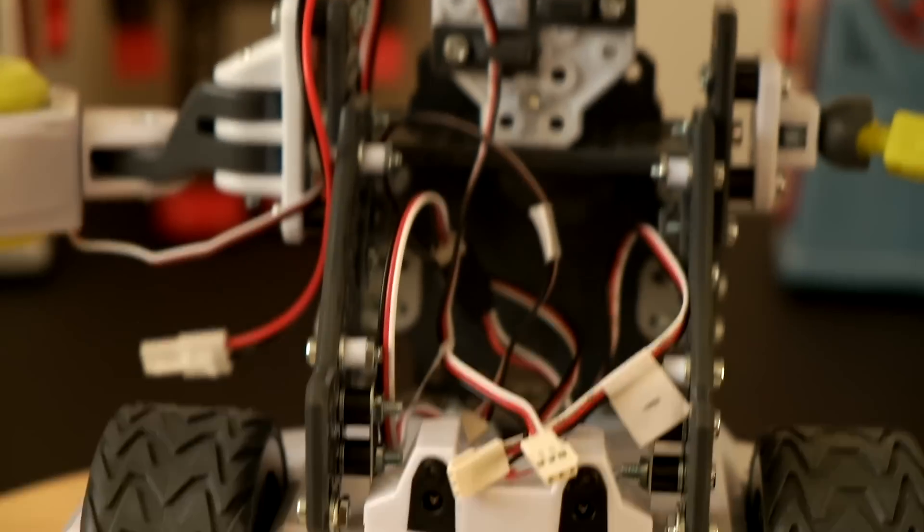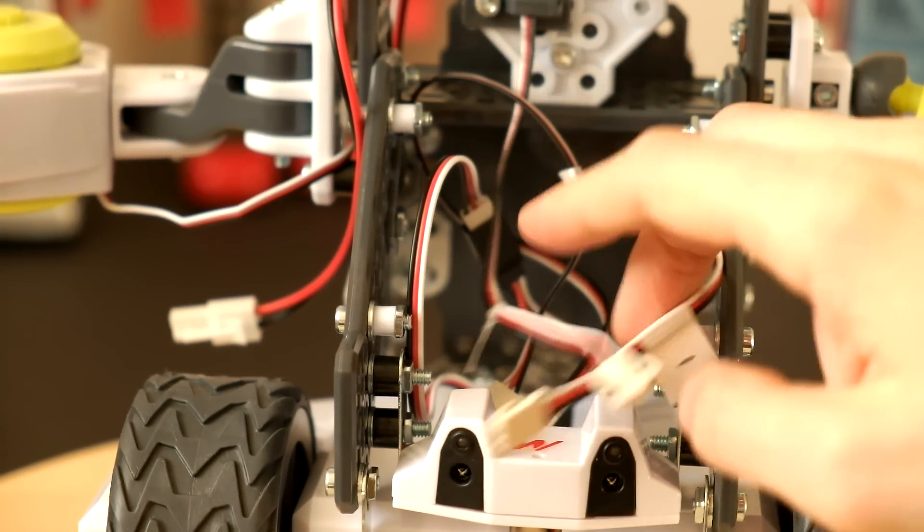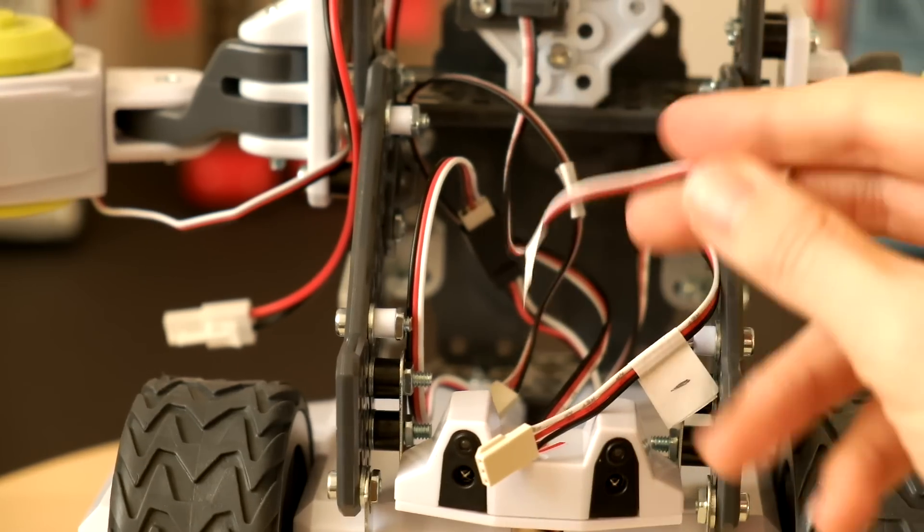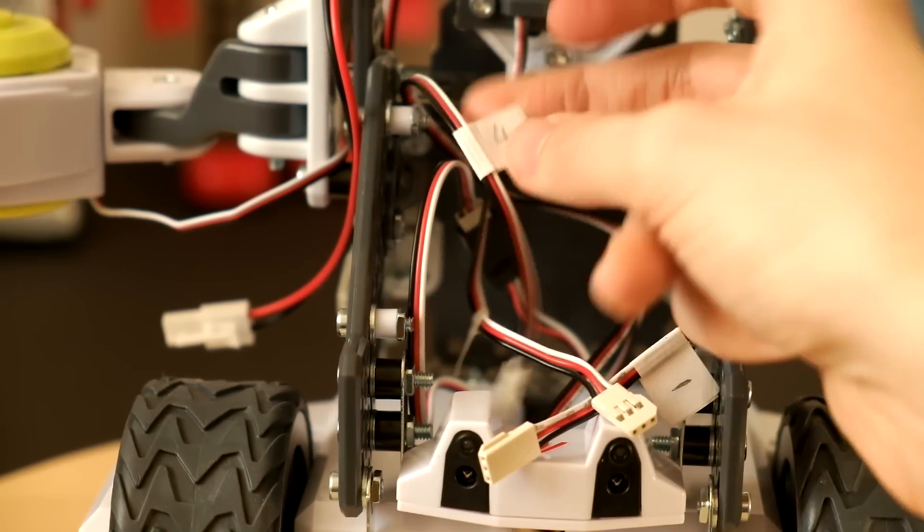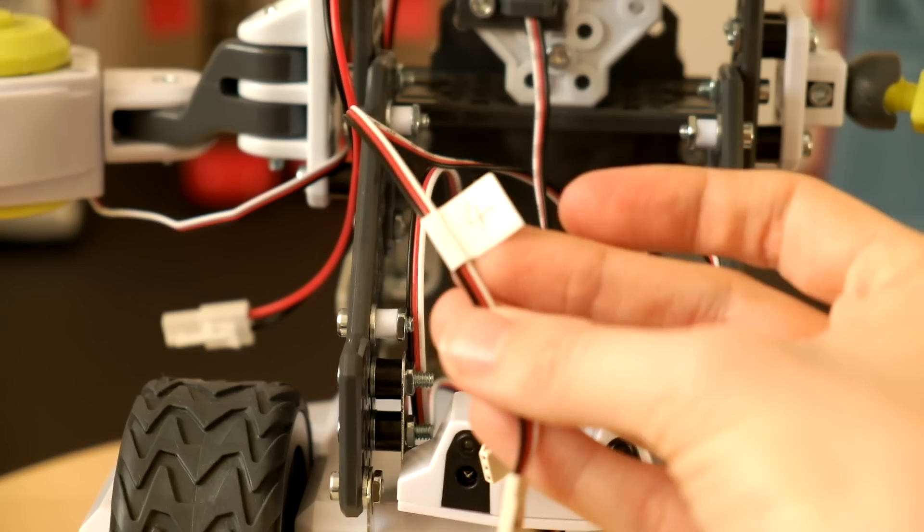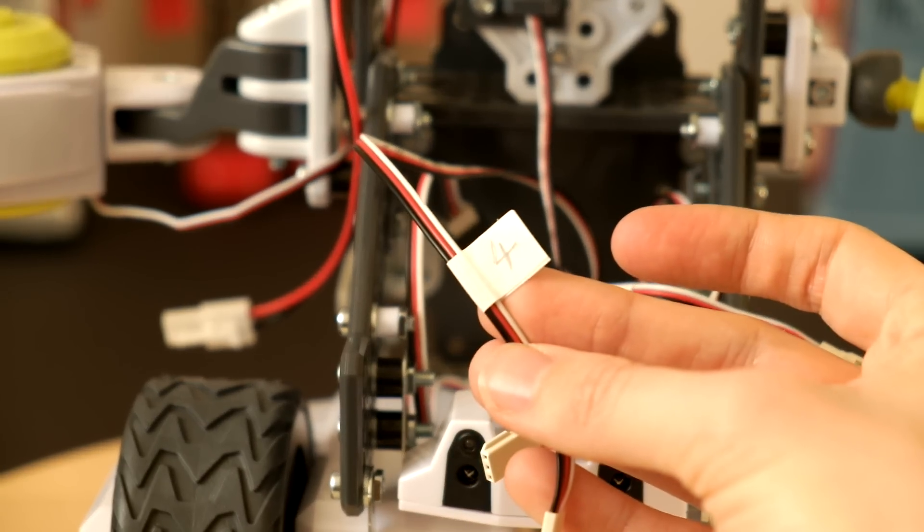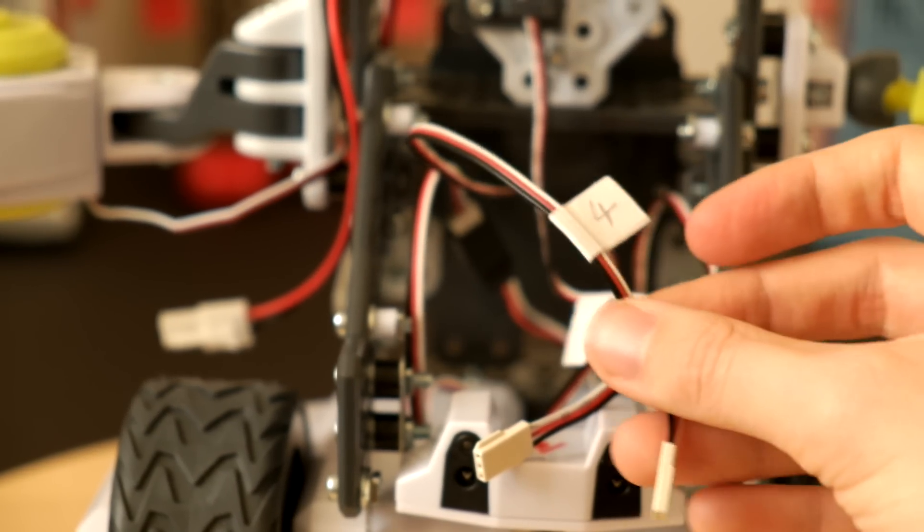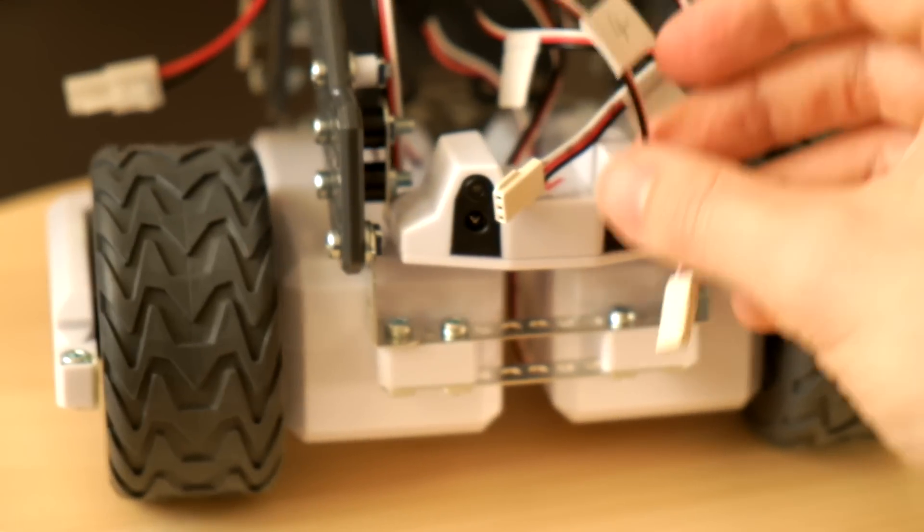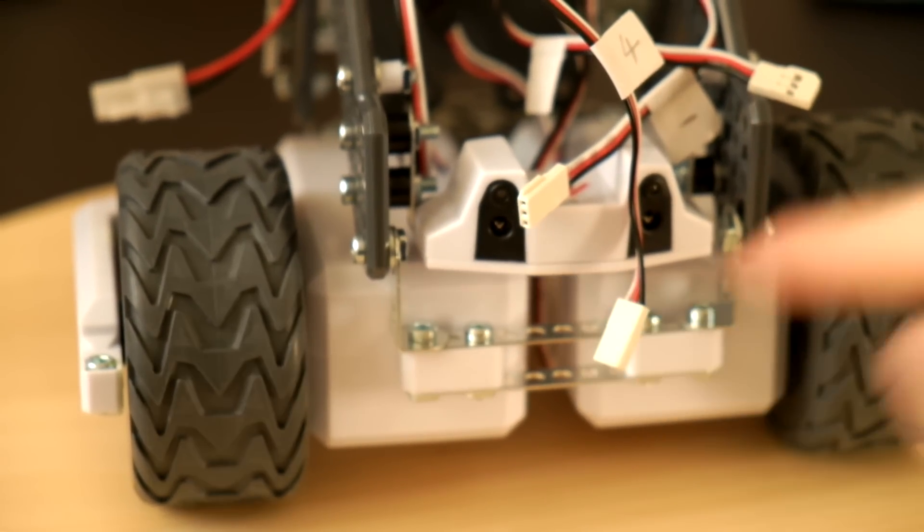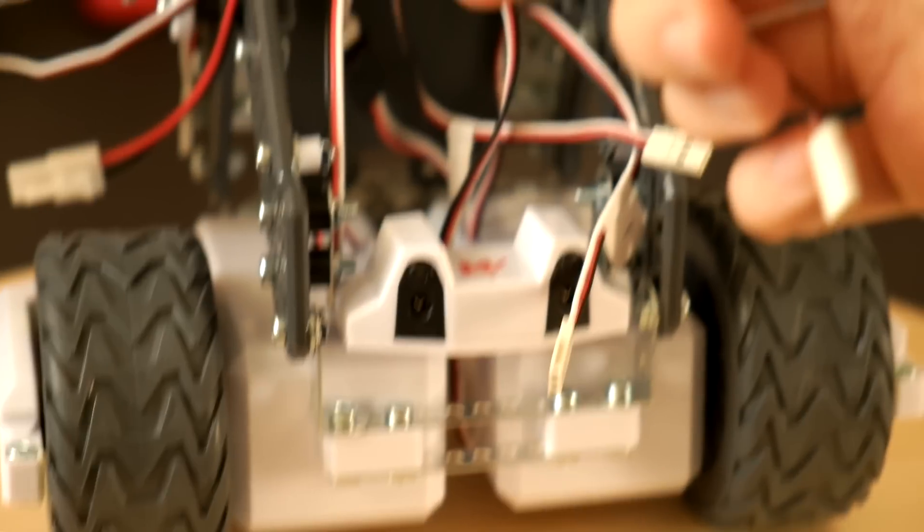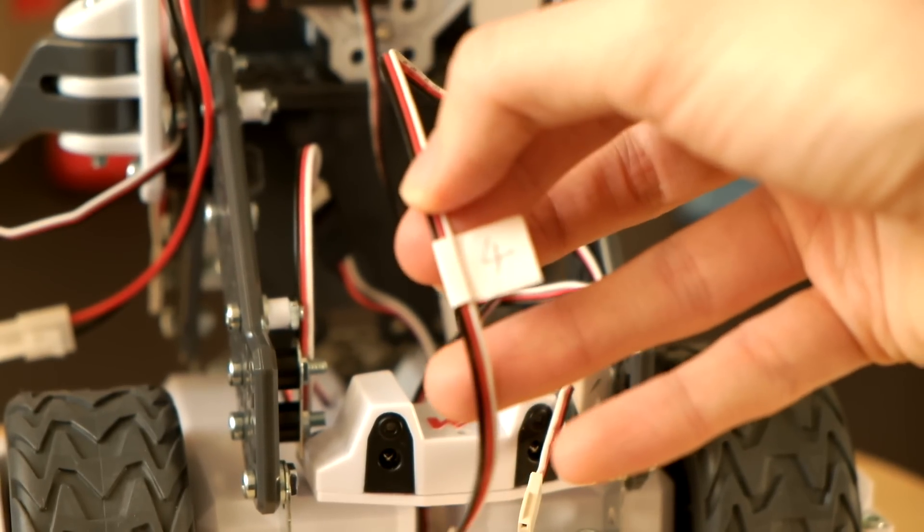That's wire number three. And then wire number four is this one. Do you see that? Wire number four is really simple. It basically comes out of the motion sensor on the front of Max.